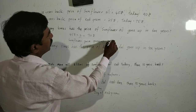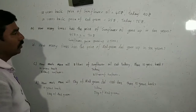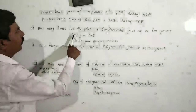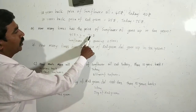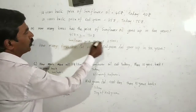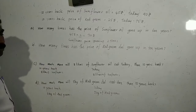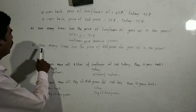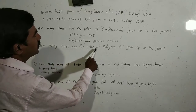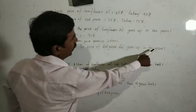Sunflower price has gone up 2 times. How we are getting 45 into 2? That is Rs. 90 — that's why we are saying 2 times. Next, problem B: how many times has the price of red gram dal gone up in 10 years?